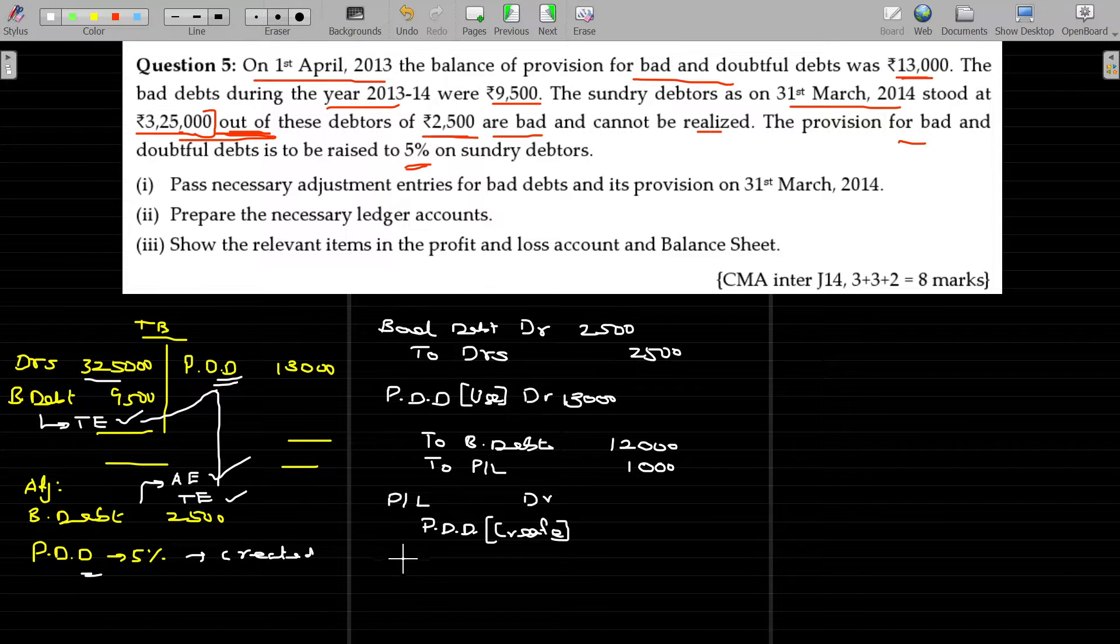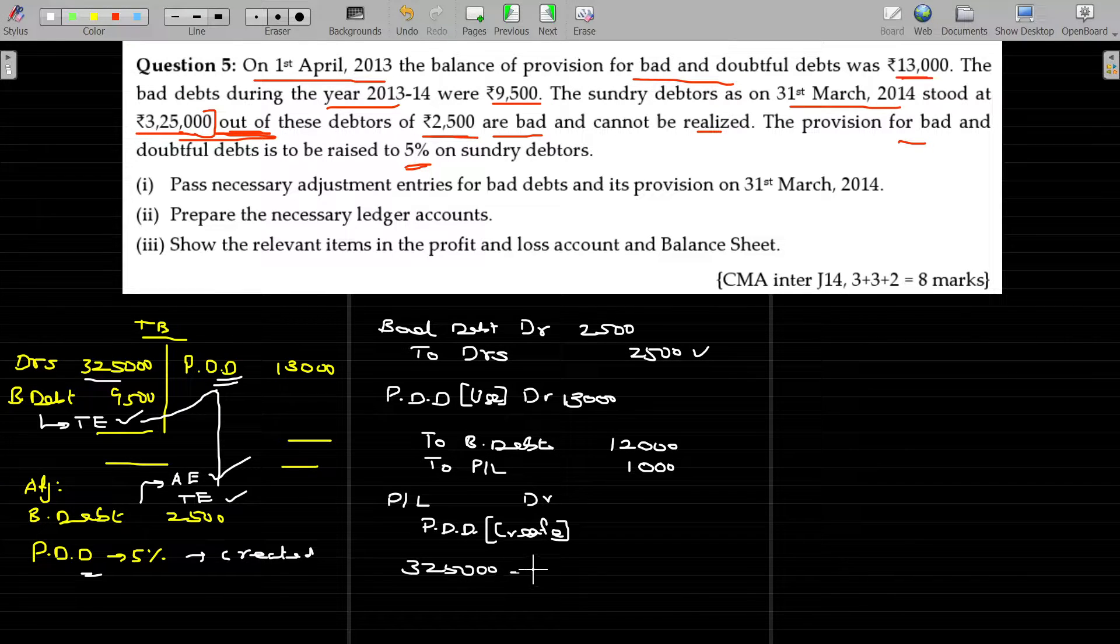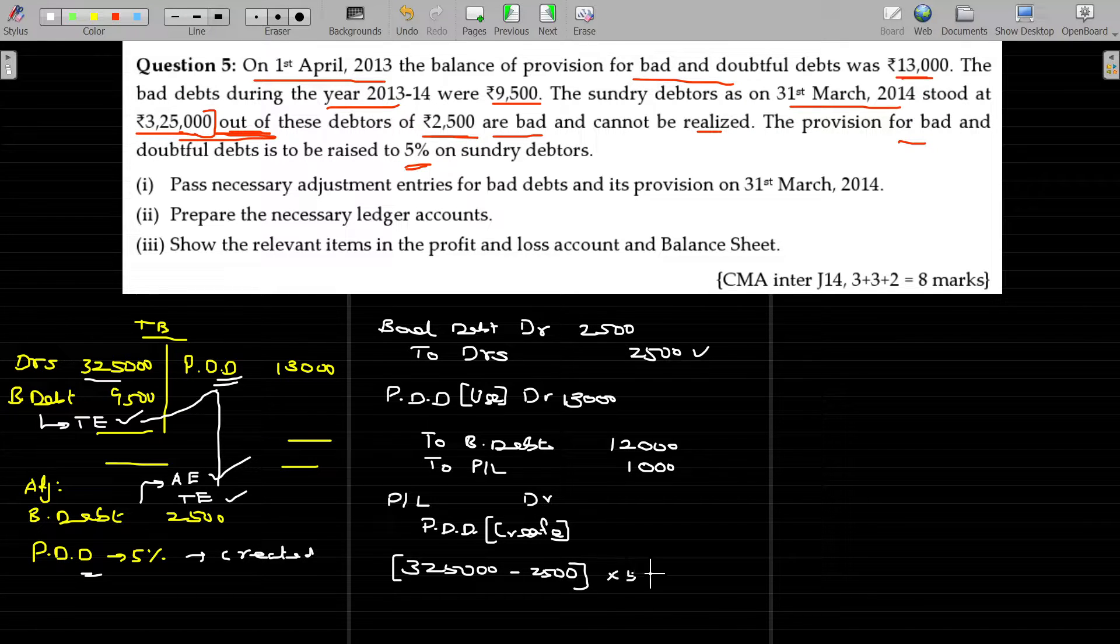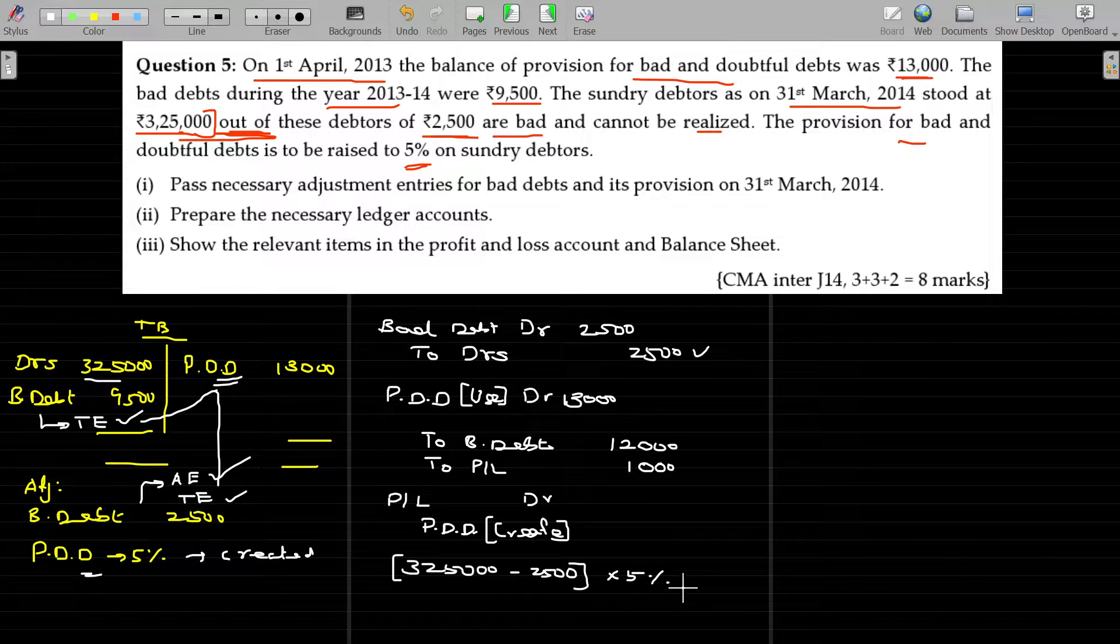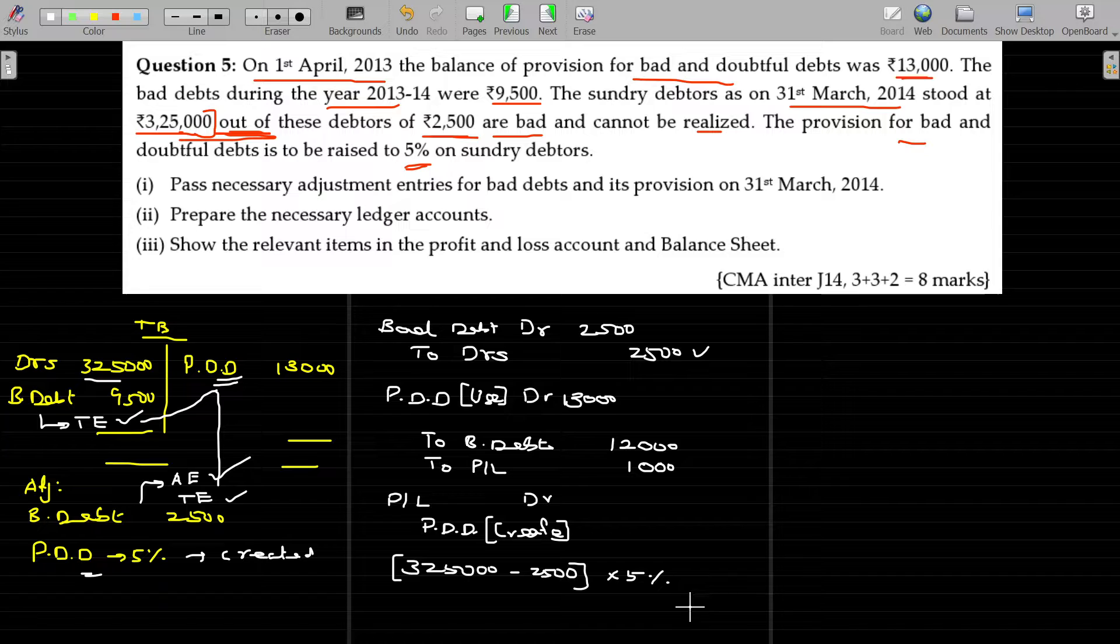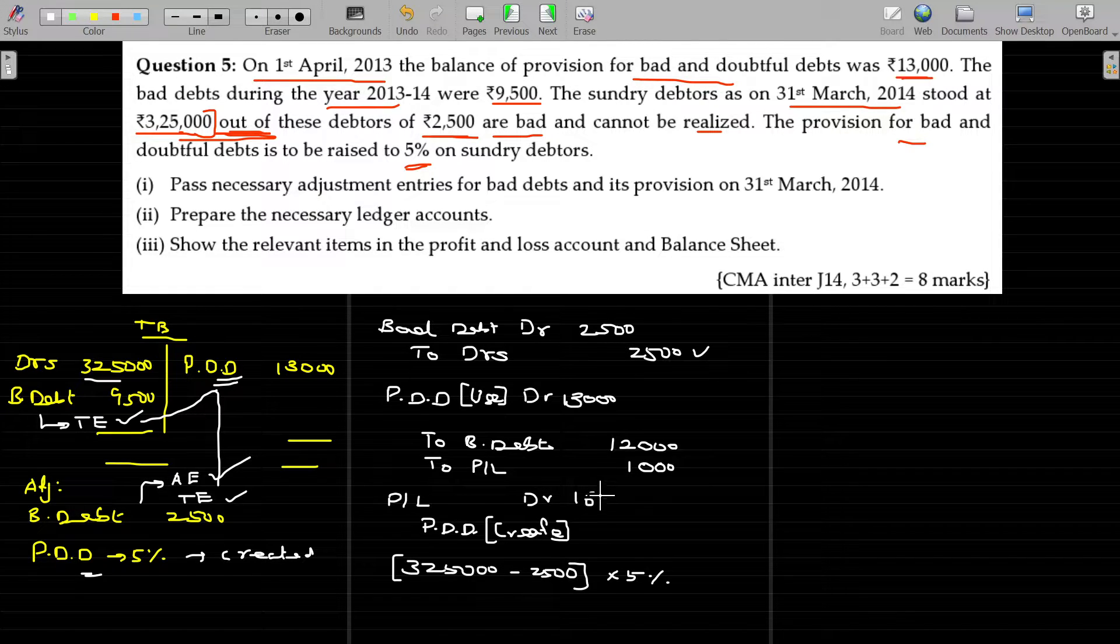As per the trial balance, debtors being 3,25,000. Because of the first journal entry, this year's bad debt 2,500 is subtracted. The ultimate value being 3,22,500, only realizable after the bad debt given in the adjustment. On that, 5 percentage will be created. 16,125 to be created. 16,125 to be created.